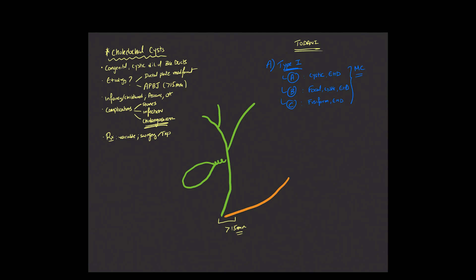The next type of choledocal cysts are known as type 2 choledocal cysts. And these really represent true diverticula associated with the supraduodenal portion of the extrahepatic biliary tree. Very rare. We really don't see a lot of cases of this, several case reports at best. But when present, they'll look like a little outpouching associated with the extrahepatic biliary tree, as can be seen in this diagram.